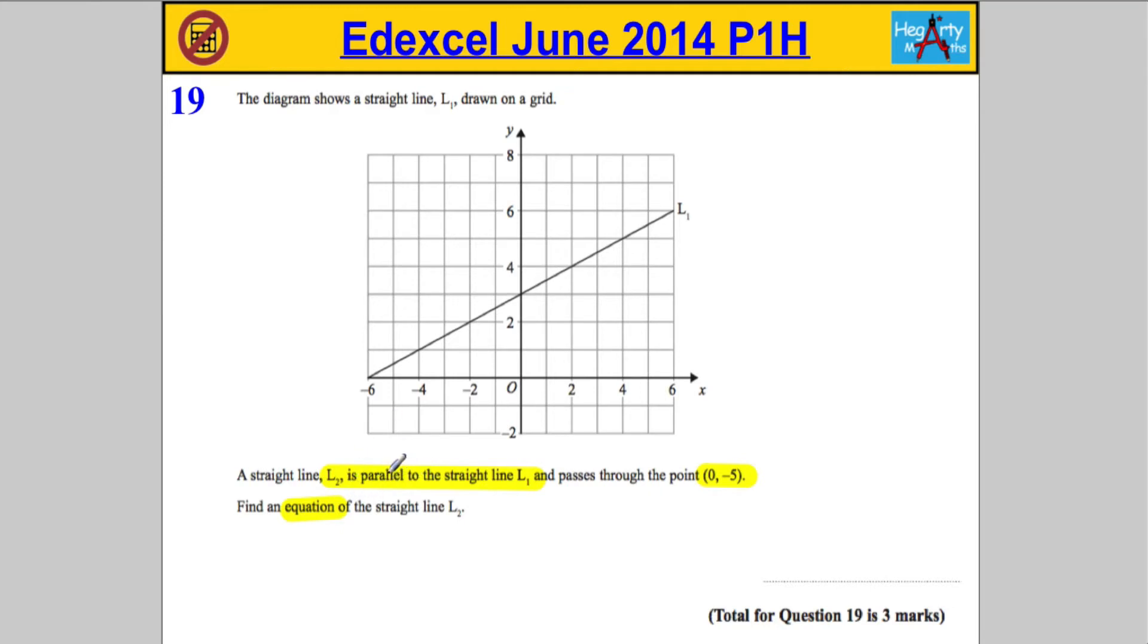Okay, now there's a relationship between the two lines because they're parallel. That means both lines must have the same gradient. Lines that are parallel have the exact same gradient. So let's have a look at this line here and see if we can work out what the gradient is.